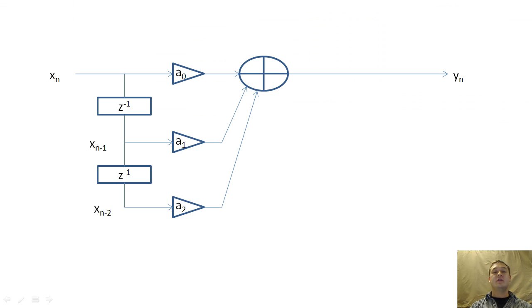A finite impulse response, or FIR filter, applies delays and multiplications directly to the input. There is no feedback loop.